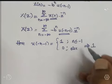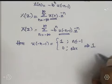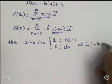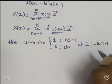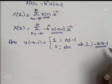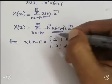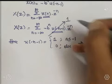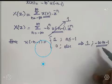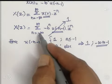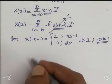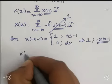The range of n lies between -∞ to -1. So if we replace u(-n-1) by 1, we have to change the limits to -∞ to -1. Therefore X(Z) = summation from n = -∞ to -1.